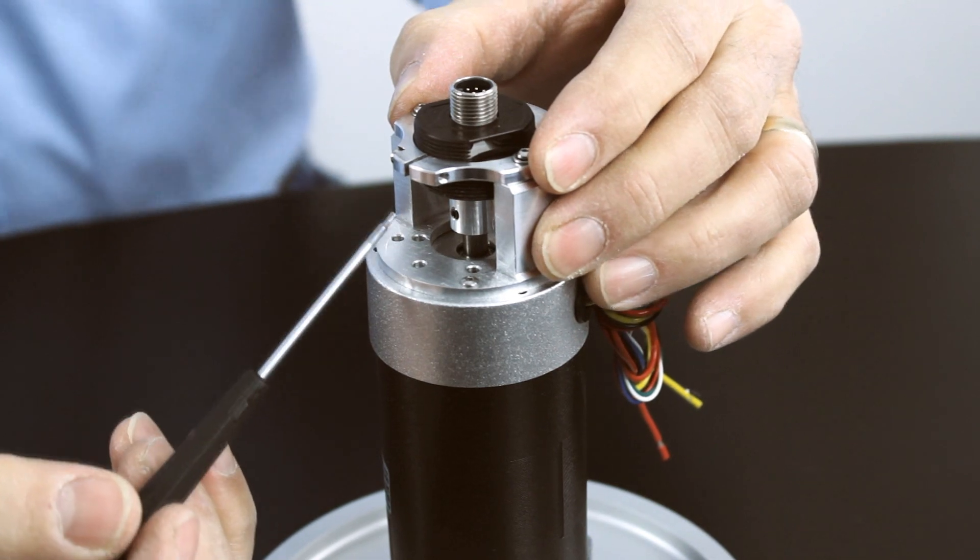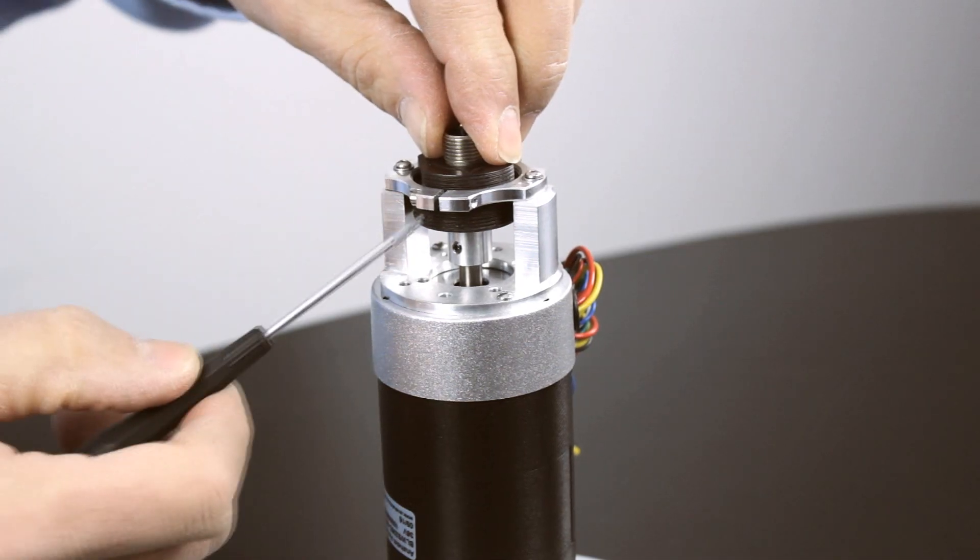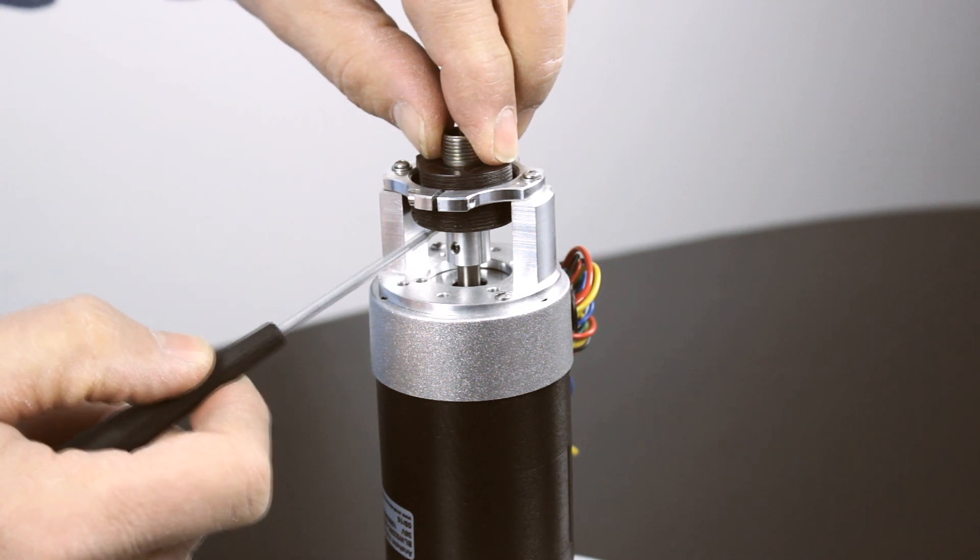Next, we'll use the self-centering and threaded features of the encoder module to center the encoder and set the appropriate air gap.